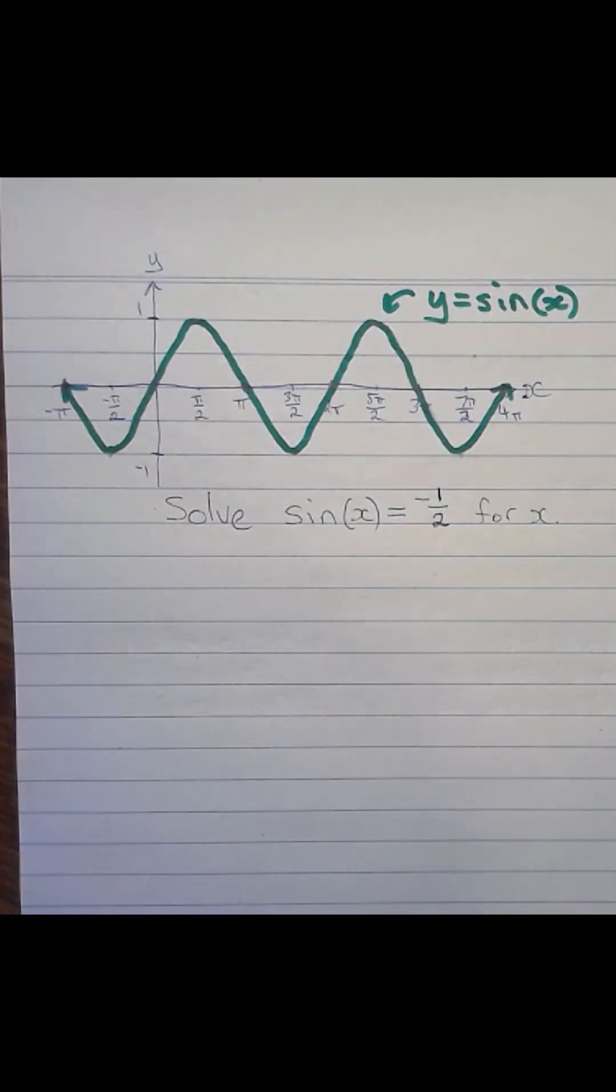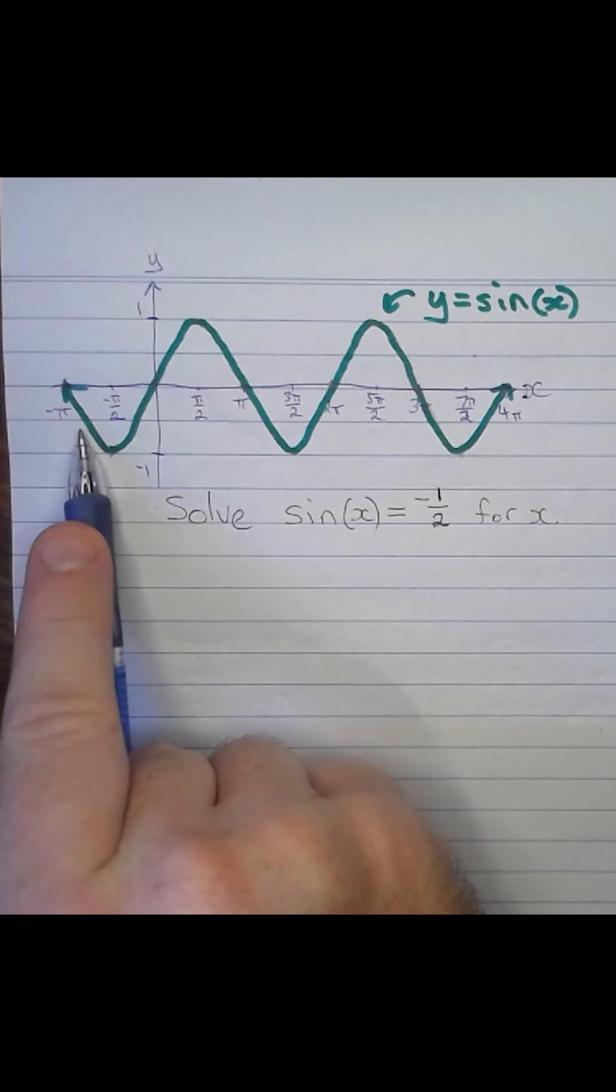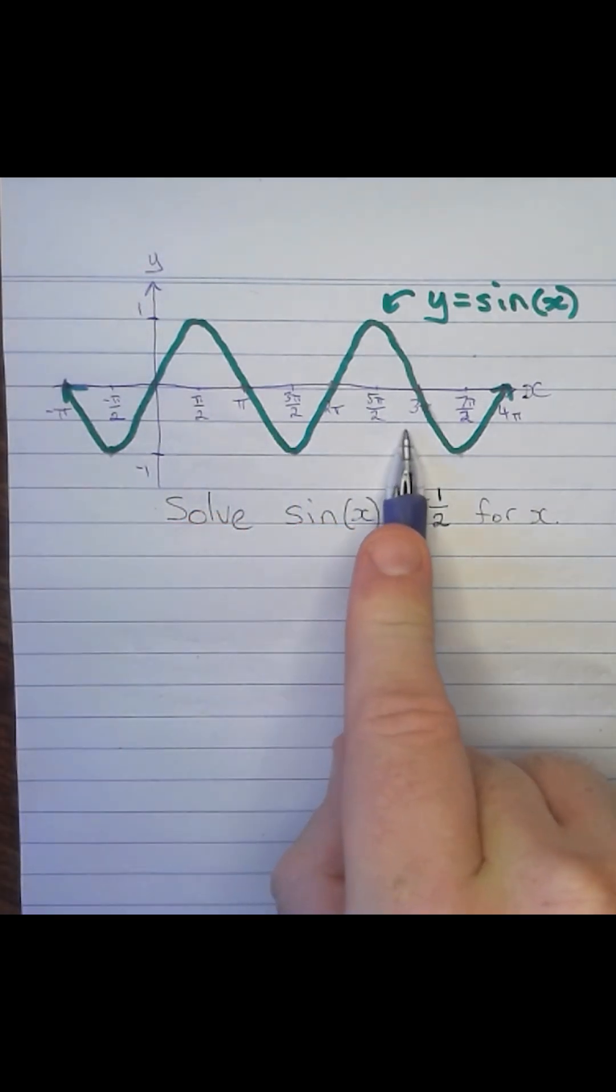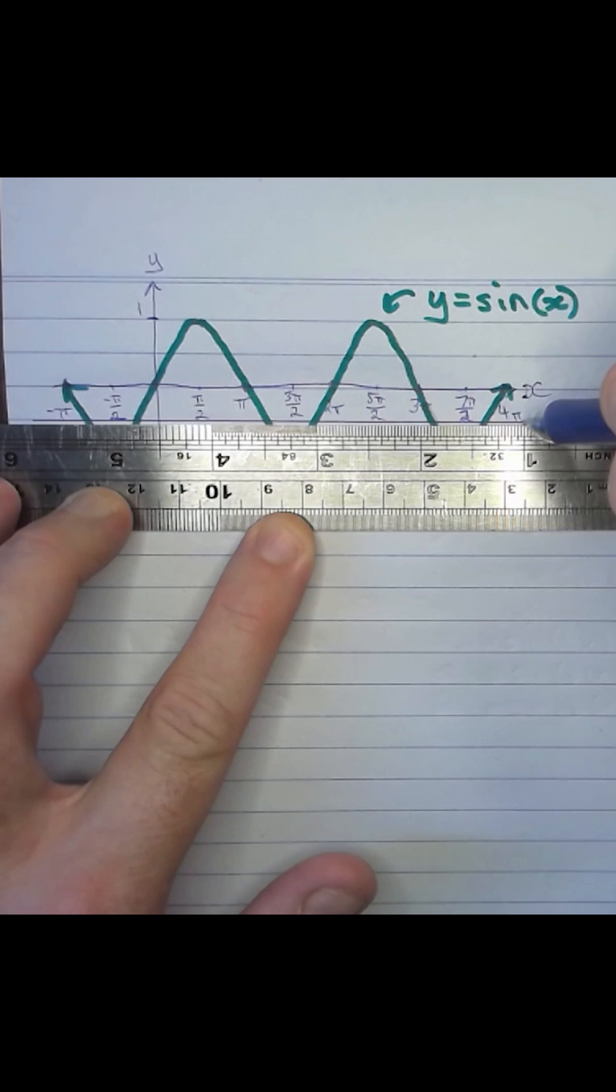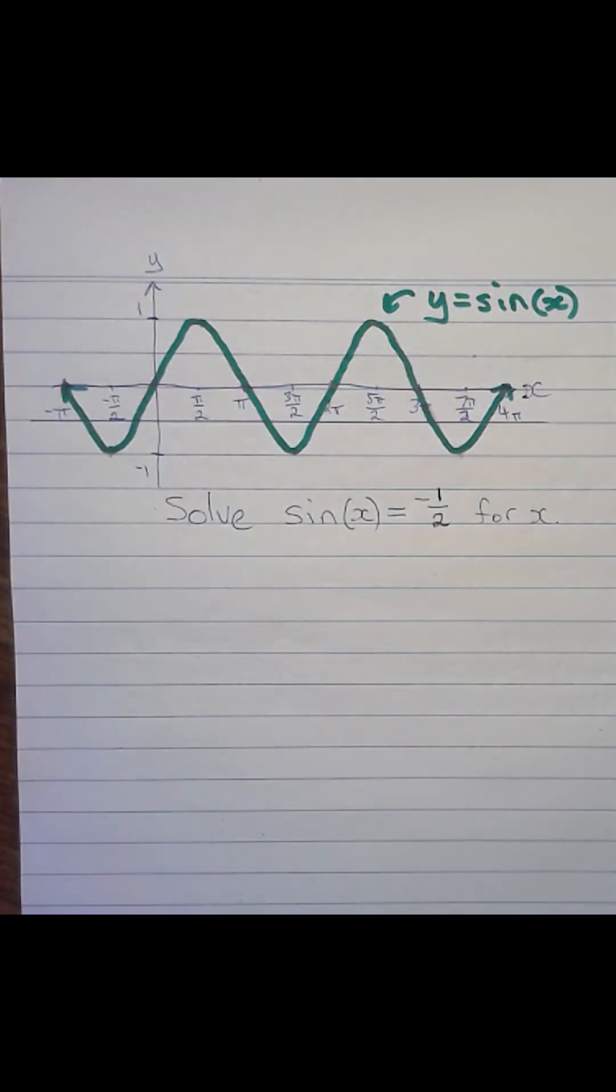Sine of x is equal to minus a half any time the green curve cuts the line minus a half. So you can see, even on the picture that I've drawn here,